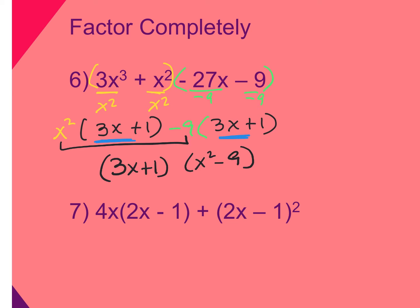Notice these binomials in parentheses are both the same, so I write it once: 3x plus 1. Then I take the two GCFs and put them together. If all you did was group and pull it out like this but did not keep going, you would still get full credit. However, this result can still be factored — it's the difference of two squares. So this stays the same, but x squared minus 9 becomes x plus 3 and x minus 3. That is now fully factored.